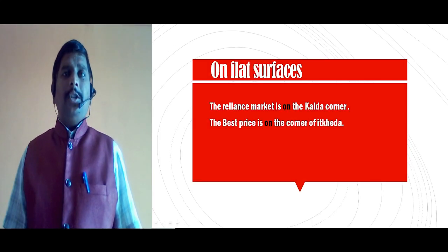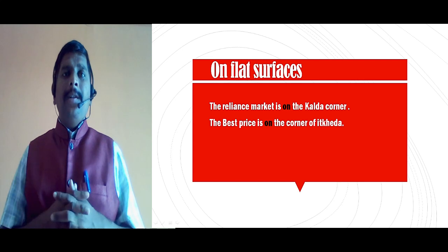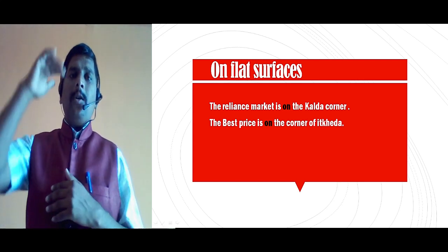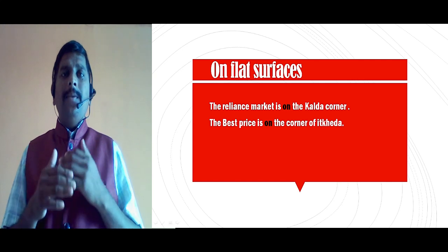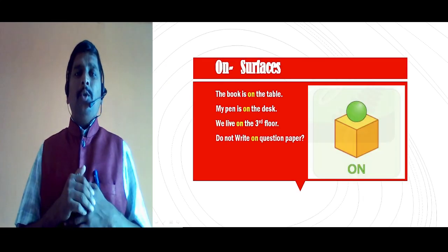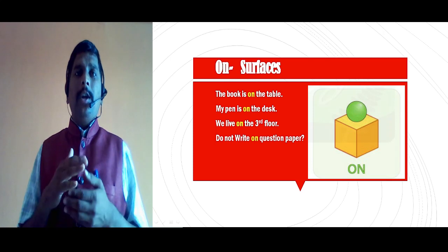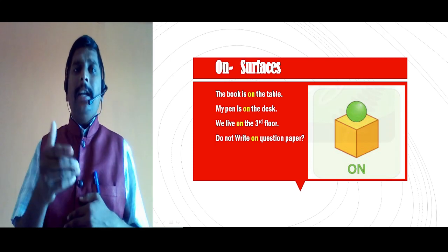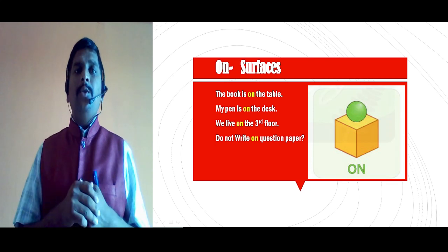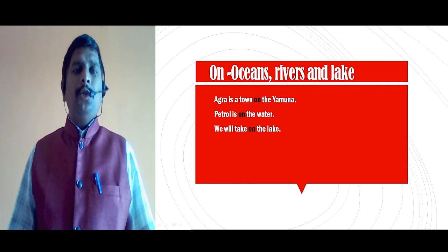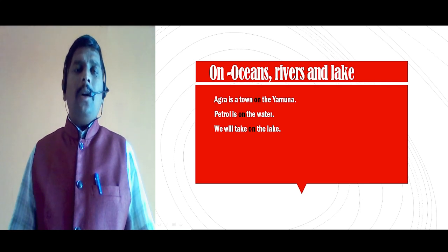Then, the 'on' preposition. 'On' is used with flat surfaces. For example: the Reliance market is on the Calda corner. The best price is on the corner of Itkheda. 'On' is used to show surfaces: the book is on the table, my pen is on the desk, we live on the third floor, do not write on the question paper. 'On' is also used with oceans, rivers, and lakes. For example: Agra is a town on the Yamuna. Petrol is on the water. We will take a walk on the lake.